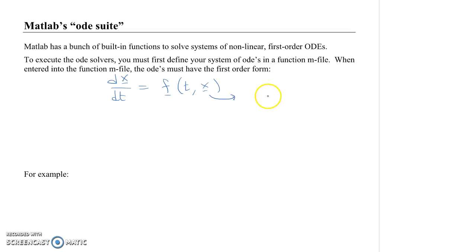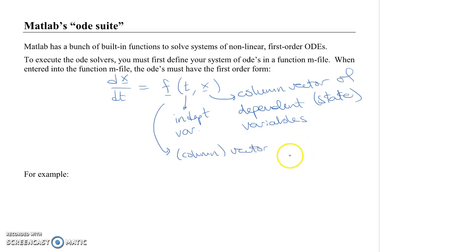For example, your X is a column vector of dependent or state variables. By state variables, I mean variables that have a time derivative in the problem. Your T variable is your independent variable, or typically time. And your F is a column vector of functions. So they're the right-hand sides of your ODE equation.